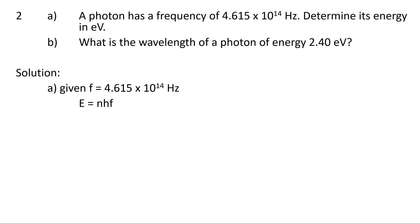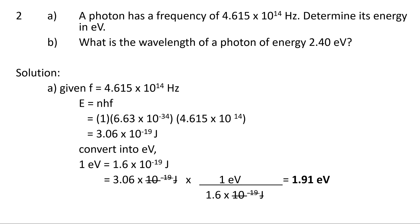You may pause the video to record the questions. Question A is asking for the energy of a photon in electron volt. The frequency given is 4.615 to the power of 14 Hz. Using Planck's energy equation E equals to NHF, number of photons is 1, Planck's constant is 6.63 to the power of negative 34 and the frequency is as given. Then convert it to eV by dividing 3.06 to the power of negative 19 Joule with 1.6 to the power of negative 19. Thus, the final answer is 1.91 electron volt.